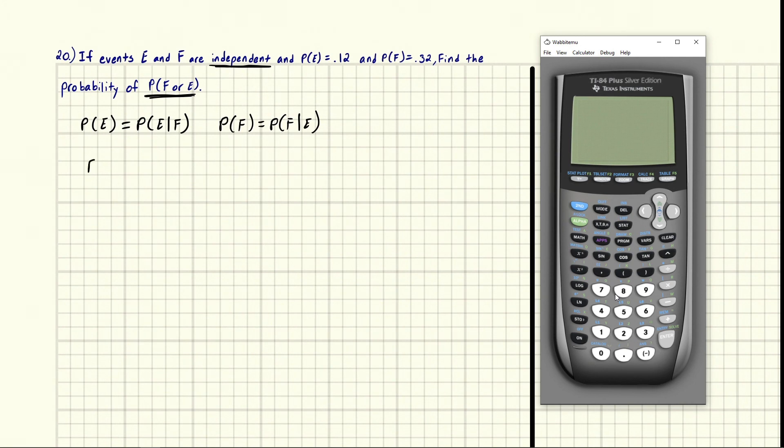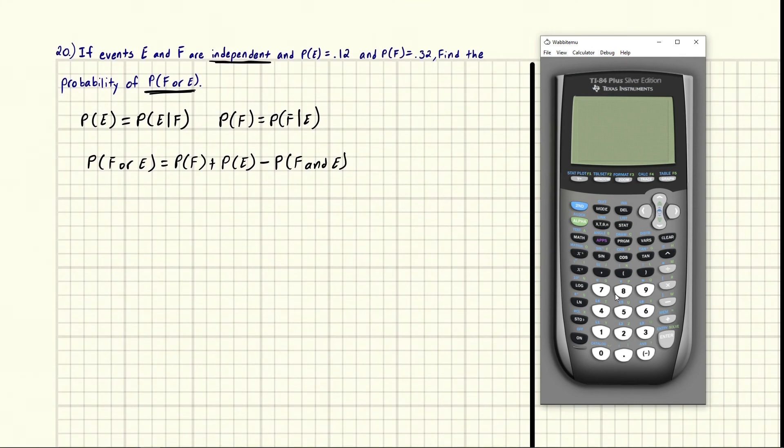We say the probability of F or E is equal to probability of F plus probability of E, and then we subtract—because this would be the end of the formula if the events are mutually exclusive. But if they overlap, we have to take off the overlapping bit, so the probability of F and E, the point where they are happening at the same time, so we don't count them twice.